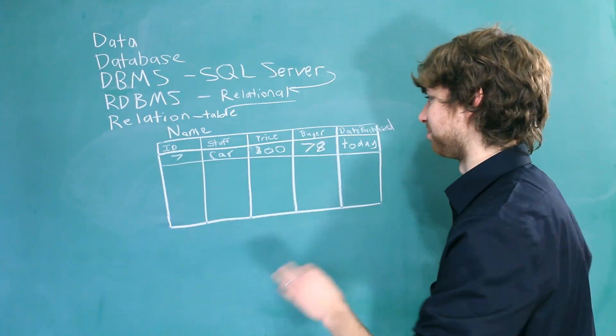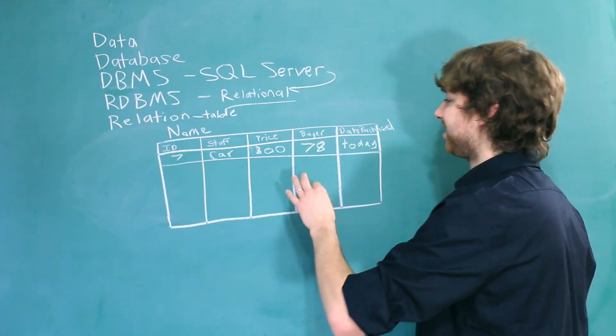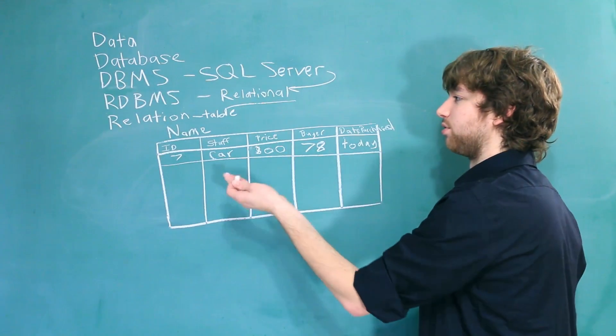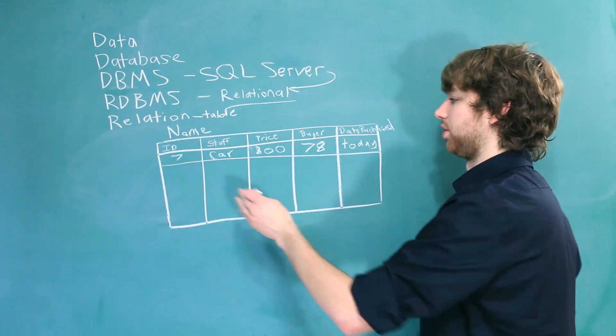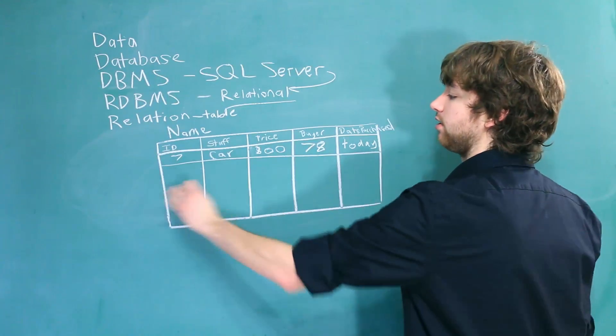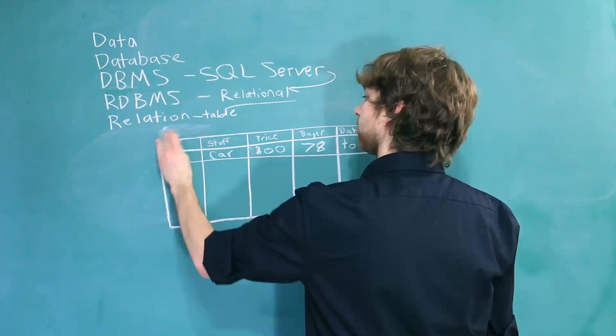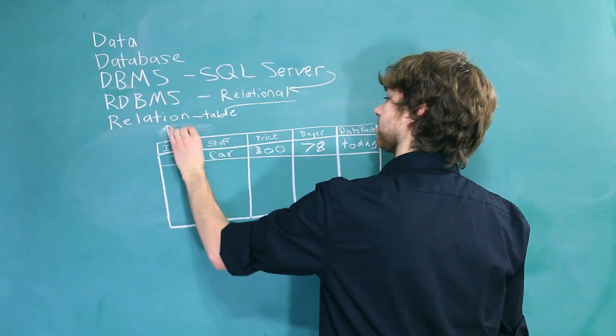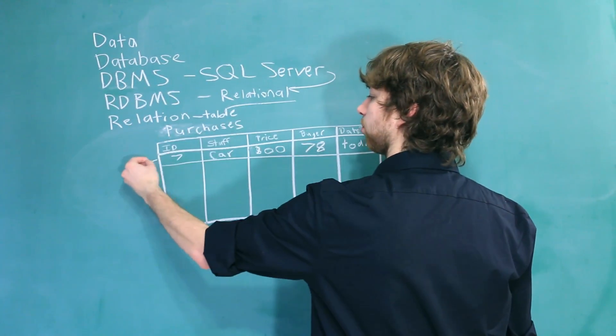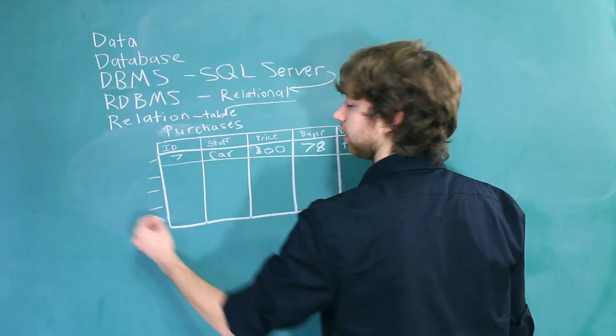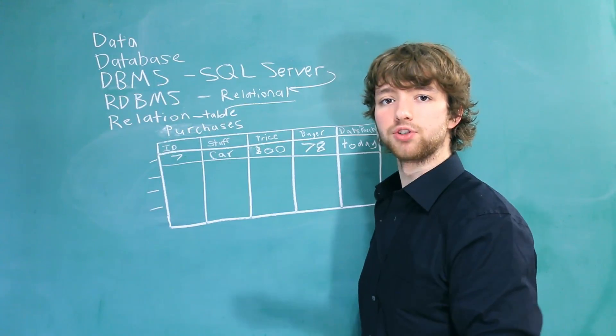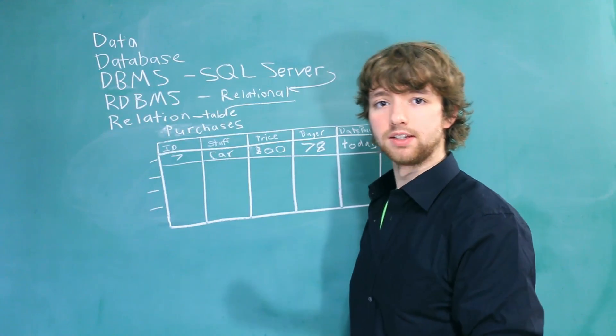Now, this is a really bad example of the kind of data you would store in here. But essentially, every single purchase is going to be entered into this table as a row. So this would probably be called the purchases table, and every single row would be an example of a purchase, or you could think of it as an instance of a purchase.